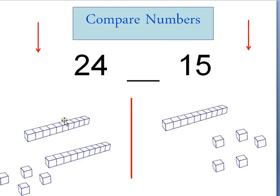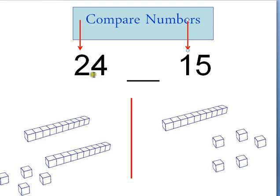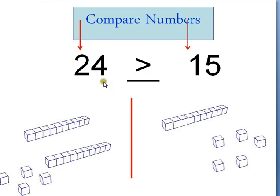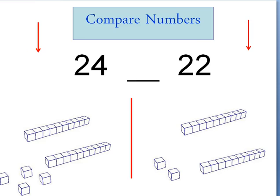Now let's look at numbers that have digits in the tens and ones place. We're going to start with the largest place value, which in this case is the tens. I have two groups of ten on this side and one group of ten on this side. The number with the largest digit in the tens becomes the larger number — so 24 is greater than 15. I looked at the tens place first, and this one had more.